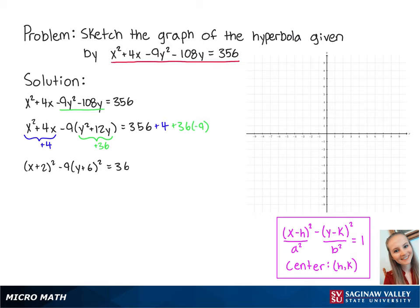Now we need to get the right-hand side equal to 1. So we're going to divide both sides by 36. After reducing the fractions, we have x plus 2 squared over 36 minus y plus 6 squared over 4 equals 1.